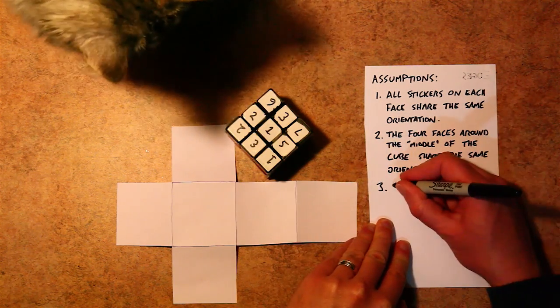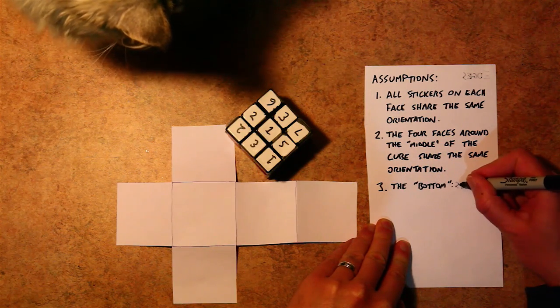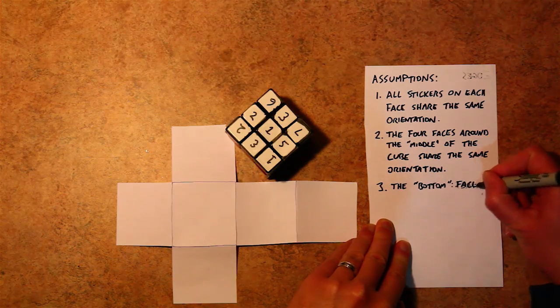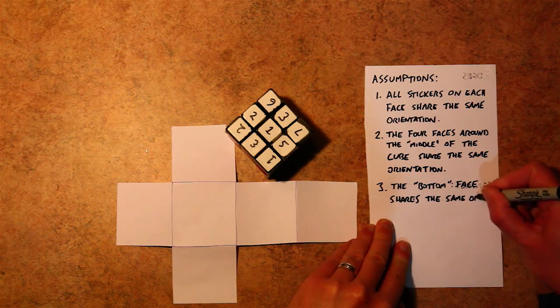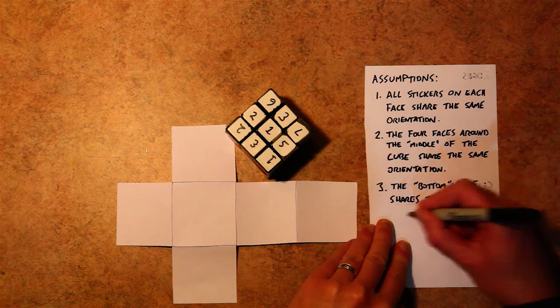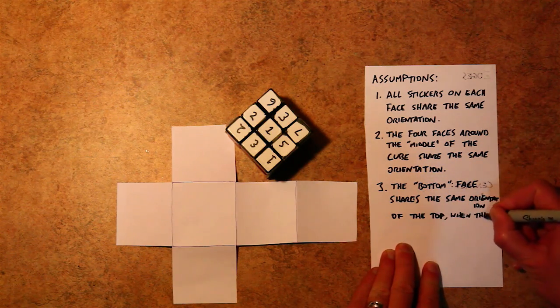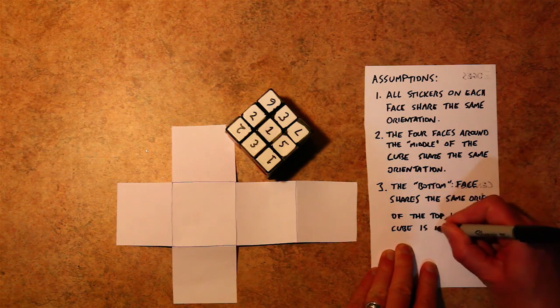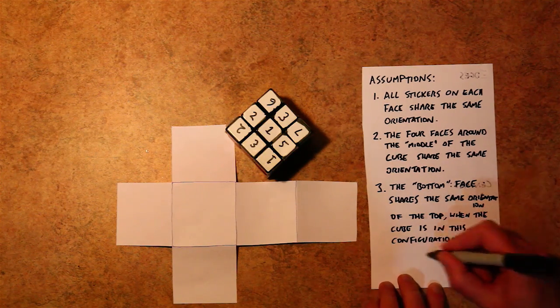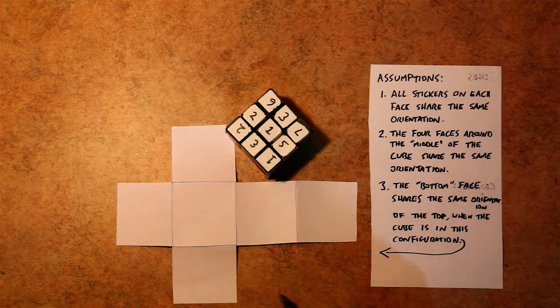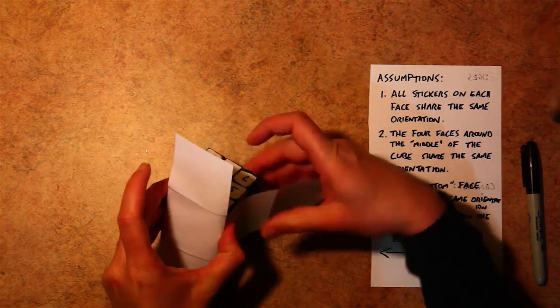The third assumption we're going to make is that the bottom face shares the same orientation of the top face when the cube is in this configuration. If this is not true, then there's three other possible configurations that your cube could be in, and you'll just have to use trial and error to figure out which configuration it is. So with that in mind, we're going to start solving this cube.